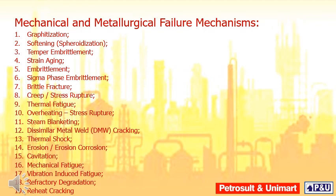Mechanical and metallurgical failure mechanisms include: graphitization, softening and spheroidization, temper embrittlement, strain aging embrittlement, sigma phase embrittlement, brittle fracture, creep, stress rupture, thermal fatigue, short-term overheating, steam blanketing, dissimilar metal weld cracking, thermal shock, erosion, erosion corrosion, cavitation, mechanical fatigue, vibration-induced fatigue, refractory degradation, and reheat cracking.